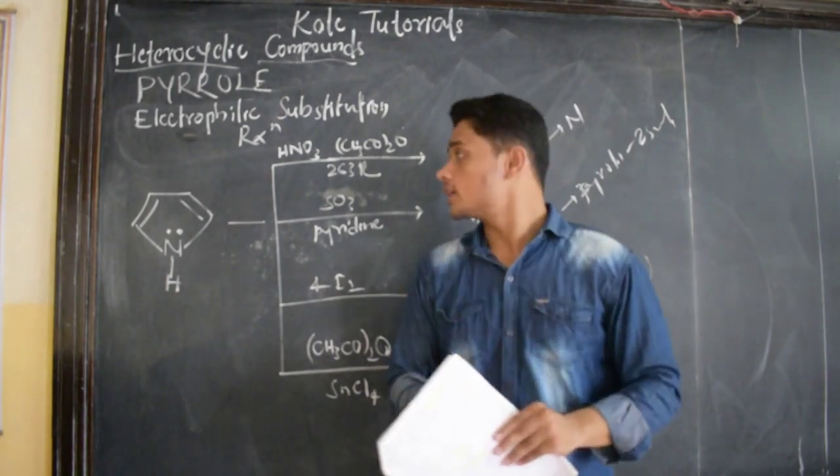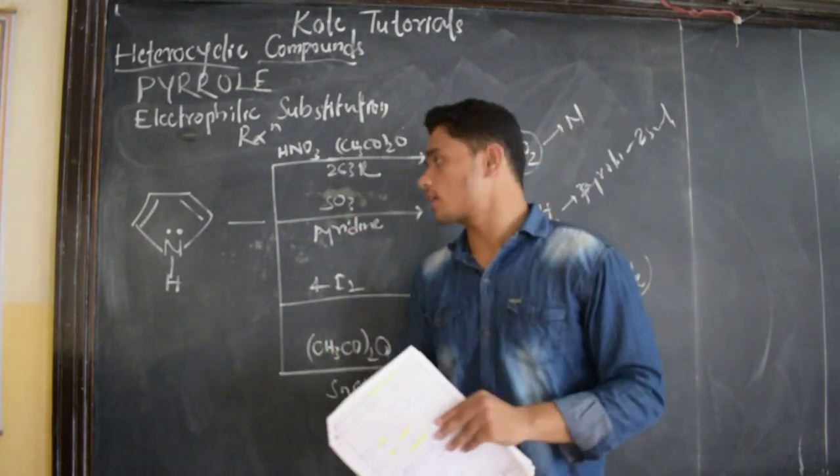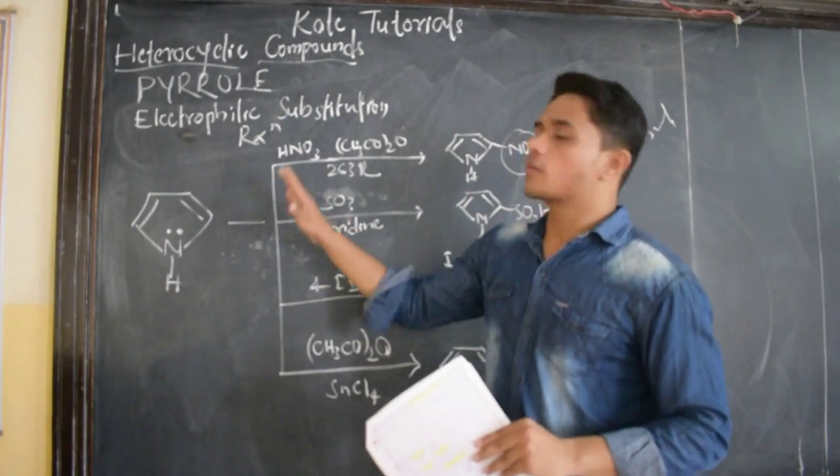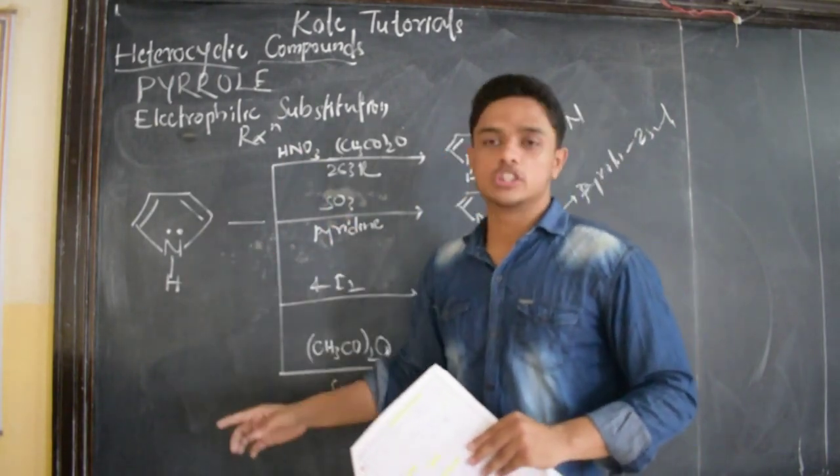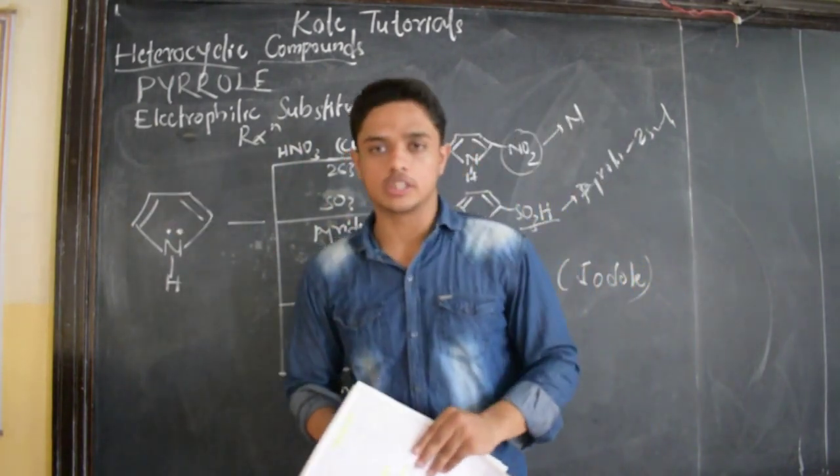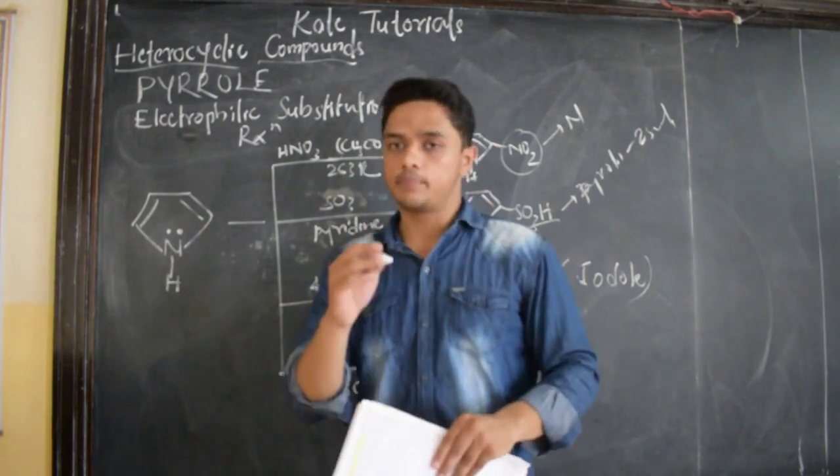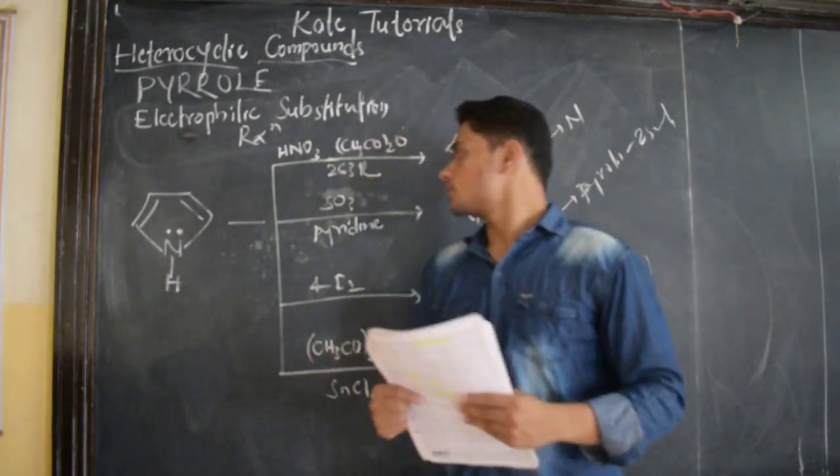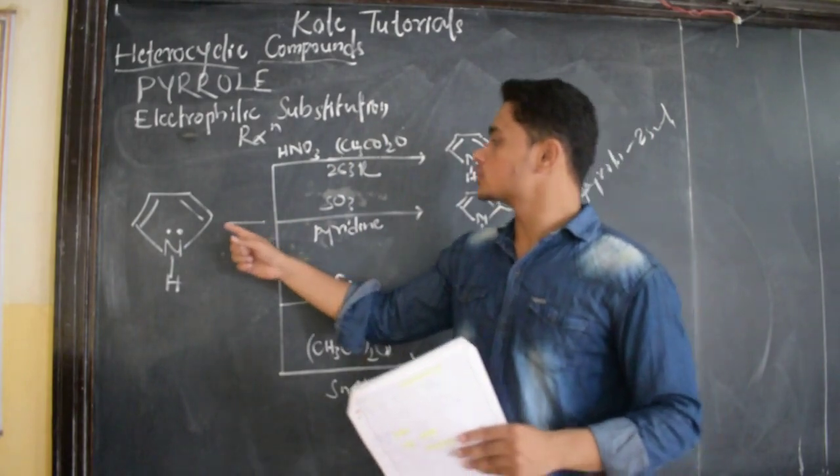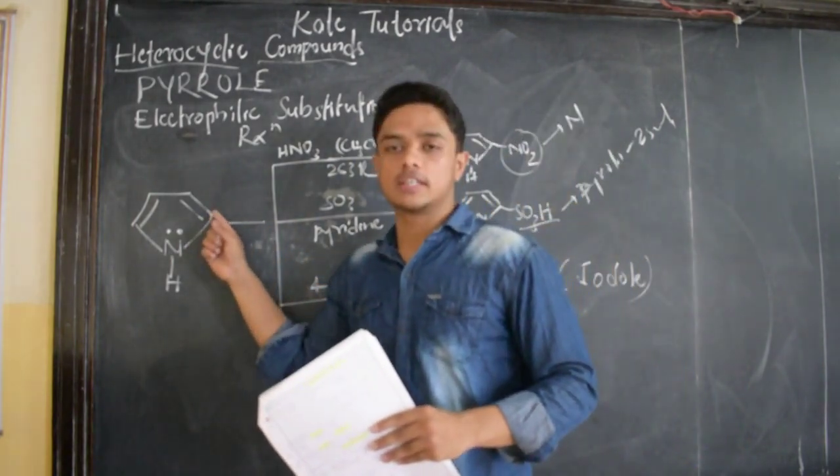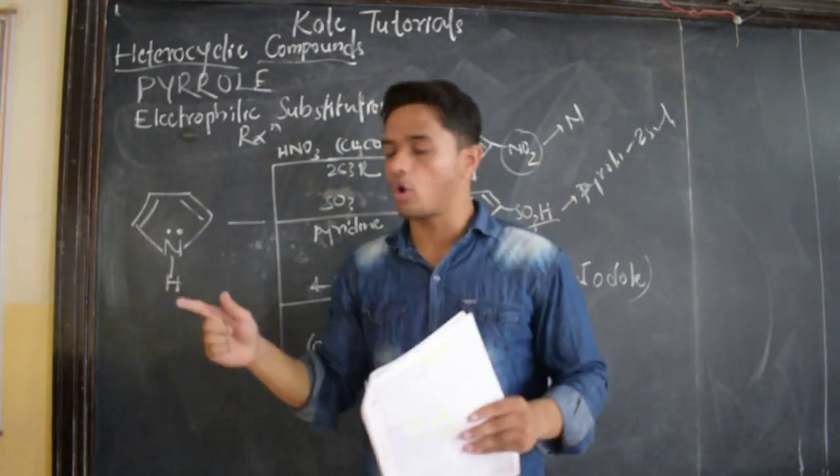And also, I told in furan why electrophile attacks only at the second position. Why not at third position? If you have not watched that video, please do watch it. Because if it attacks the second position, the number of canonical structures will be more.